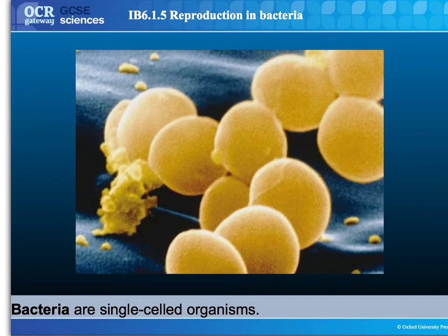It's easy to think bacteria are quite simple, but actually they're really quite complicated — they carry out the normal functions of any other cell. Due to their small size, they can be seen under a light microscope, but only just, and you cannot see the detail. The detailed photograph on this slide was taken with a very high-powered electron microscope, which works by firing electrons at a sample and imaging the electrons reflected back. Electron microscopes can magnify thousands of times more than a light microscope.